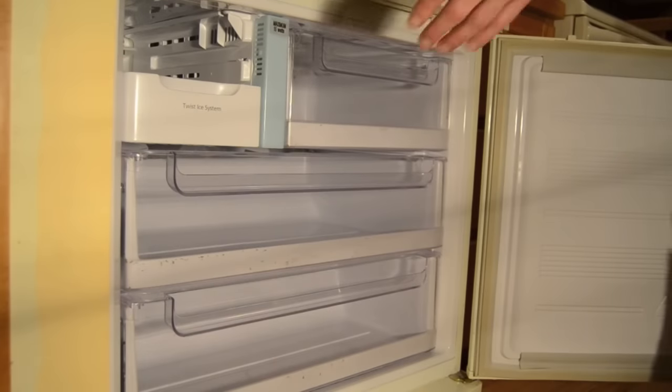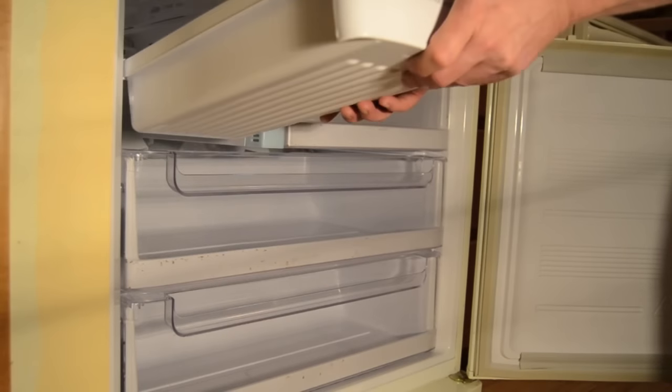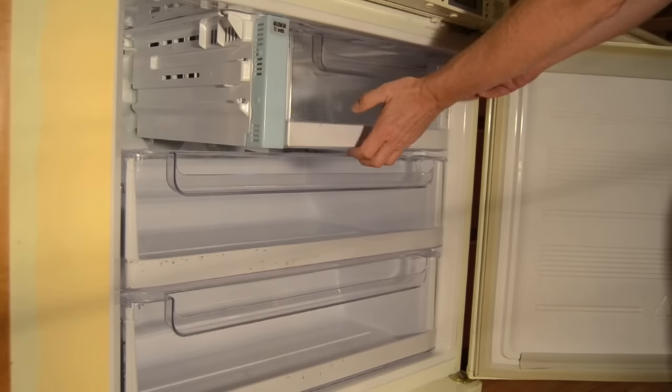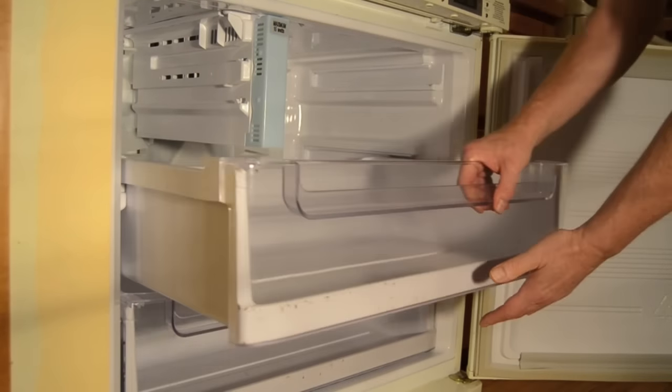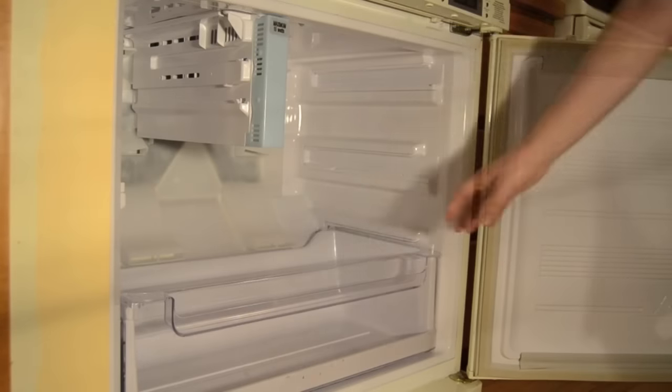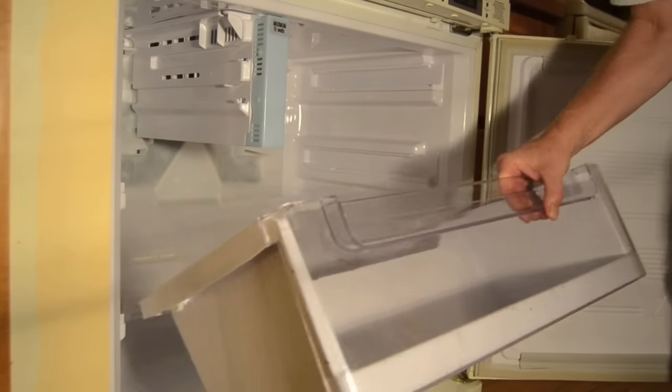Now, remove the ice tray, ice cube holder, and freezer drawers. In this model, simply slide the drawer out, then when it is almost fully extended, lift up slightly and pull.